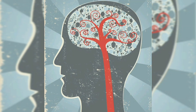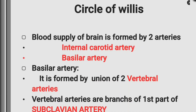Now let us discuss one of the most important topics of neuroanatomy: blood supply of the brain and the circle of Willis. The blood supply of the brain is formed by two arteries: the internal carotid artery and the basilar artery.